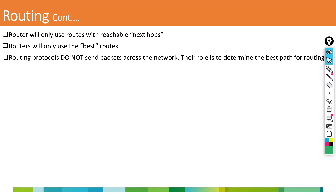Routing protocols do not send packets across the network — their role is to determine the best path. Unlike a switch which broadcasts to everyone, a router only supports two types of communication: unicast and multicast. If any broadcast traffic comes to the router, it is dropped automatically. If the router knows the destination, it processes the traffic; if it doesn't know how to reach the destination, it drops the packet.